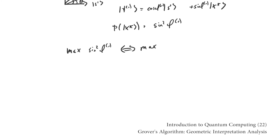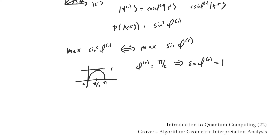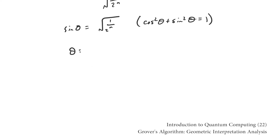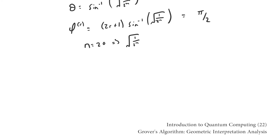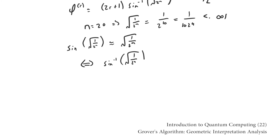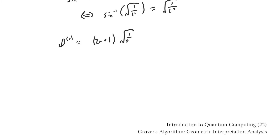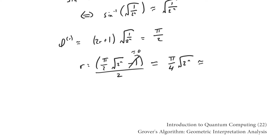The goal is to maximize this probability. sin² achieves its maximum of one when its argument is π/2, which is just another way of saying that when φ_r equals π/2, ψ(r) equals x star, so the probability of collapsing to x star upon measurement is one. θ is equal to the inverse sine of √(1/2^n), so φ(r) equals (2r + 1) times the inverse sine of √(1/2^n). For moderate n, we can use the small angle approximation and replace the inverse sine of √(1/2^n) with √(1/2^n). So φ(r) is roughly (2r + 1)·√(1/2^n). Setting this equal to π/2, we find that we only need to apply the subroutine around √(2^n) times to maximize the probability of collapsing the system to x star.